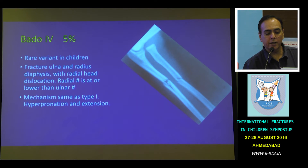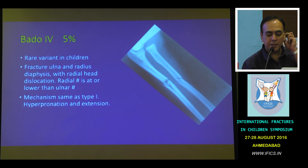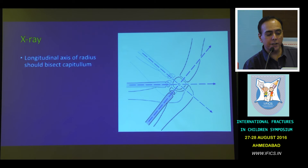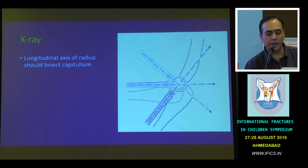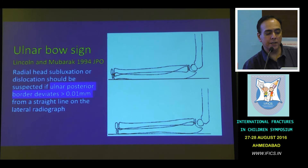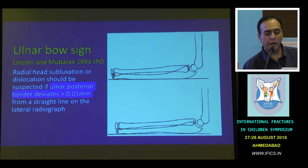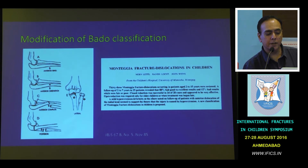Bado Type 4 injuries are again rare in children. There's a fracture of both the ulnar and radial diaphysis, with the radial fracture at or below the level of the ulnar fracture, and an anterior dislocation of the radial head. These are commonly missed injuries. We need to know that the longitudinal axis of the radius should pass through the capitellum in any position of the elbow. Lincoln and Mubarak described the ulnar bow sign, stating that if you draw a straight line connecting the metaphyseal region of the proximal and distal ulna, the diaphysis should not deviate from that line by more than 0.01 millimeters — if it does, you must suspect a Monteggia fracture.